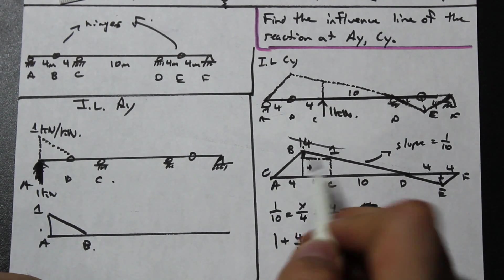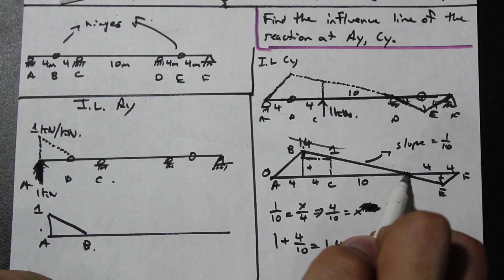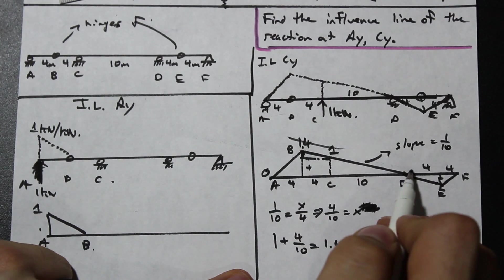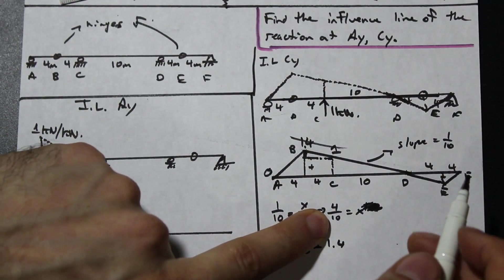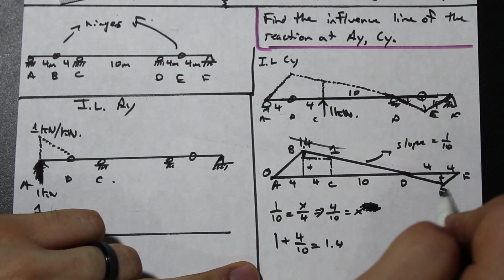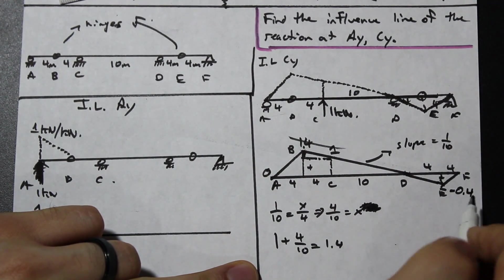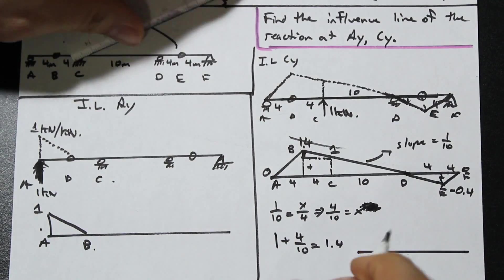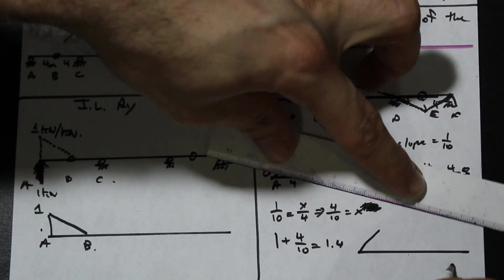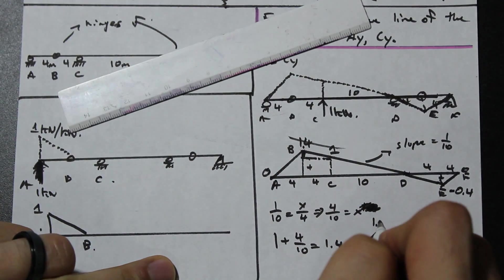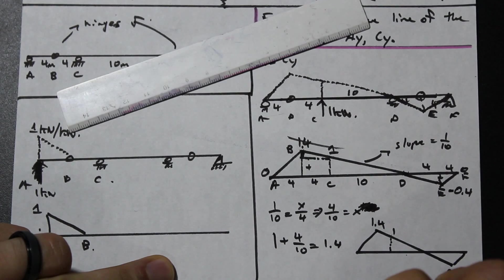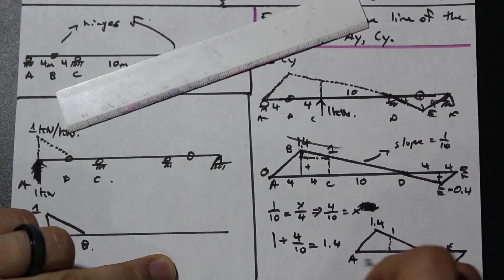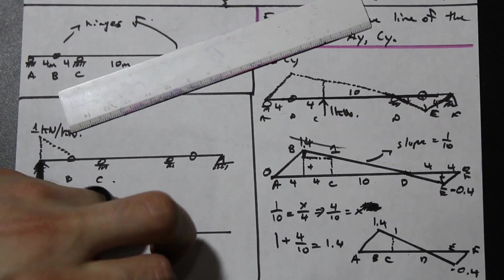The influence line drops to zero at the supports. On the right side, we use the same slope of one over ten with a run of four meters: four over ten equals 0.4, but it's negative because it goes down, so the value at E is negative 0.4. The final influence line goes: 1.4 at B, 1 at C, zero at the supports, and negative 0.4 at E, for points A through F.